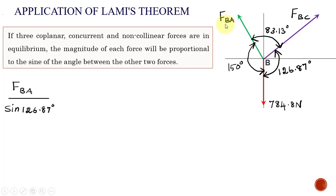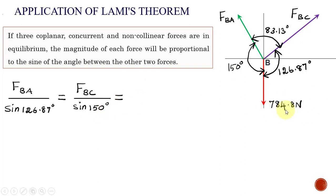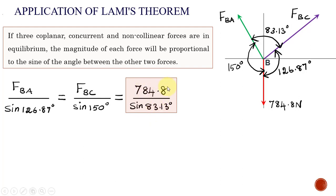Applying Lamy's theorem: FBA divided by sine of the angle between the other two forces equals FBC divided by sine of the angle between the other two forces. So: FBA / sine(126.87°) = FBC / sine(150°) = 784.8 / sine(83.13°). We can calculate the last term first since all values are known: 784.8 divided by sine(83.13°) equals 790.47.